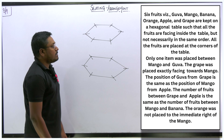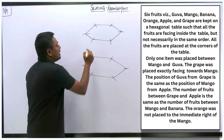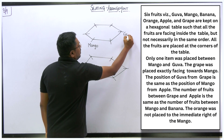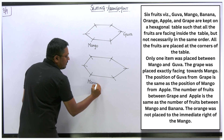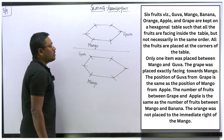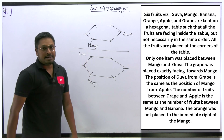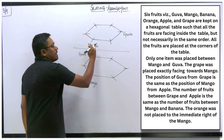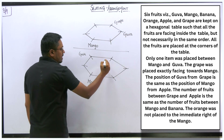First point: only one item was placed between mango and guava. So between mango and guava there will be only one item. We can fix mango here — either mango's right-hand side can be guava, or mango's left-hand side can be guava. In both diagrams, you can see between mango and guava there is a gap of one fruit. Second point: the grape was placed exactly facing mango. So the fruit exactly opposite mango will be grape.